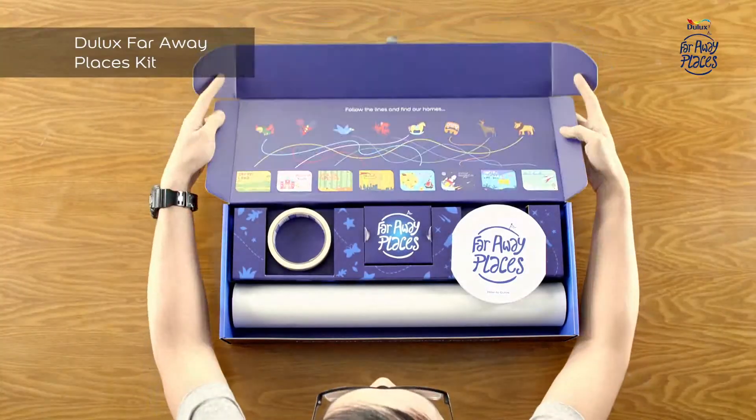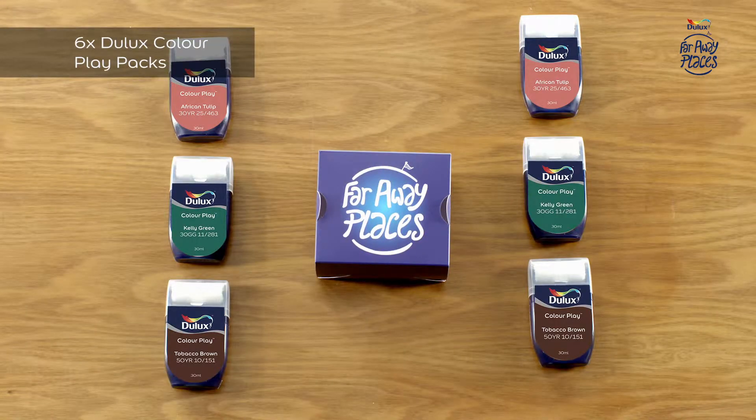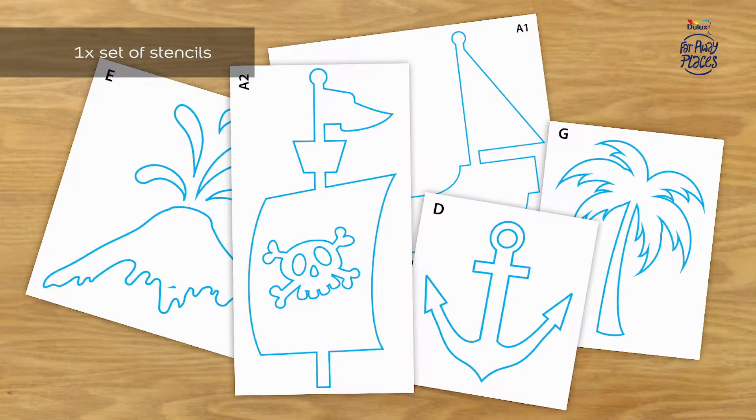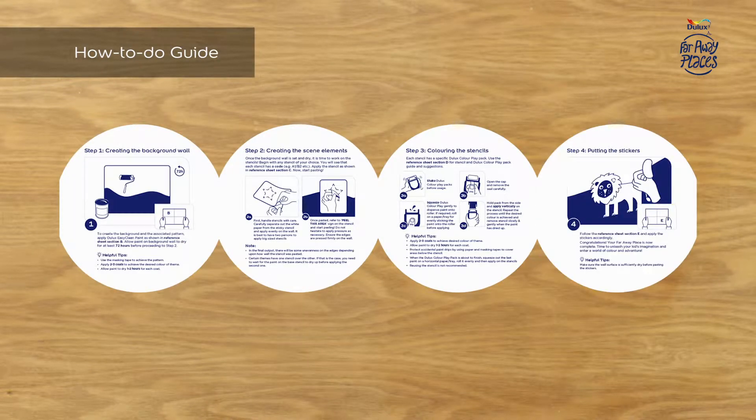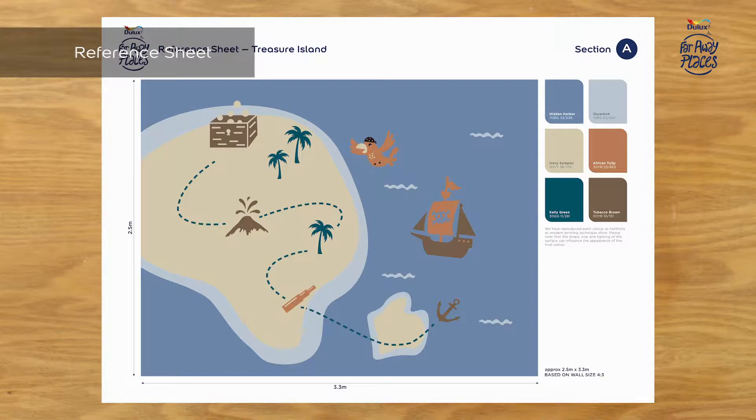Let's see what's in the kit. Six Dulux color play packs, a set of stencils, a set of stickers, the How To Do guide, a reference sheet, and two masking tapes.